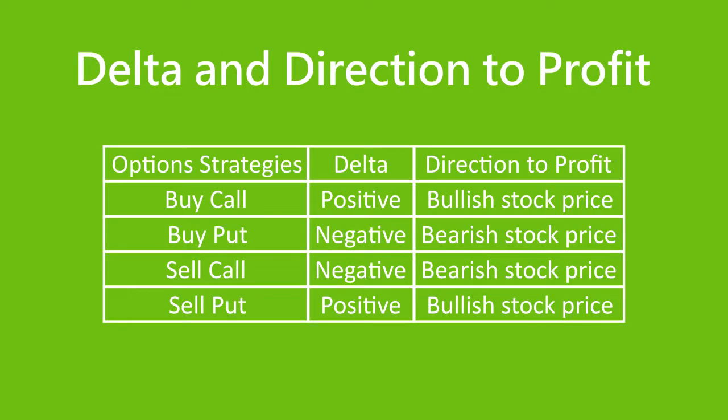Buying and selling different option types results in different signs of deltas. Long calls and short puts have positive deltas because the trades profit from an uptrend, while short calls and long puts have negative deltas because we want the stock price to go down to be profitable. We can use the combined delta to see whether we are bullish or bearish in our portfolio, and use trades of opposite deltas to hedge and protect our investment.